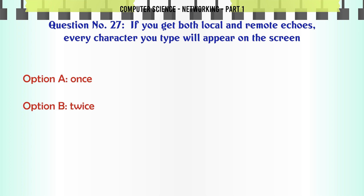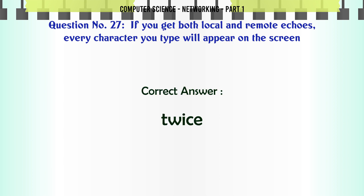If you get both local and remote echoes, every character you type will appear on the screen: A. Once. B. Twice. C. Three times. D. Never. The correct answer is: Twice.